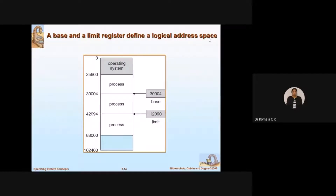The base and limit registers together define a logical address space. From physical addresses — for example, 25600, 3004, and so on — we assign new values to the base register and the limit register. This is how we define a logical address space with the help of base and limit registers.